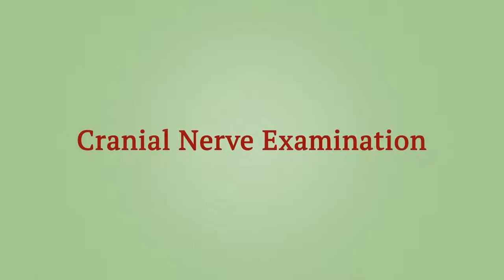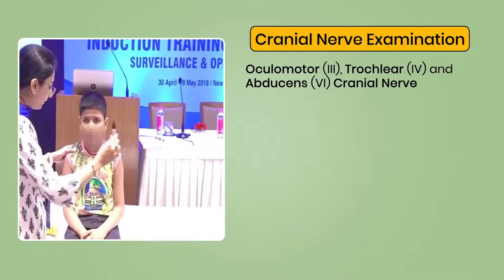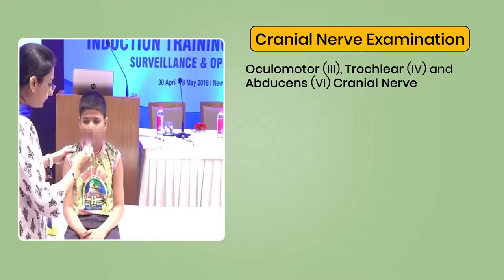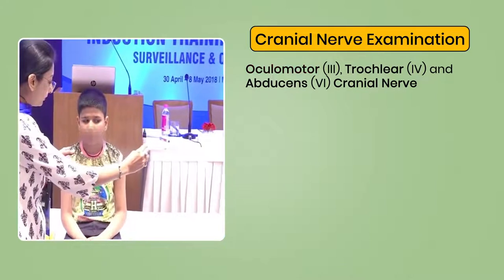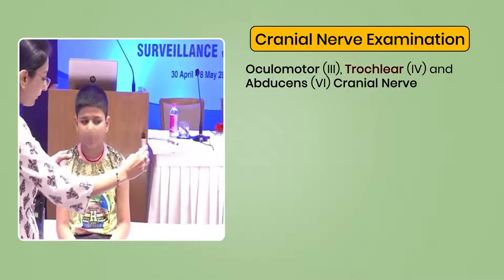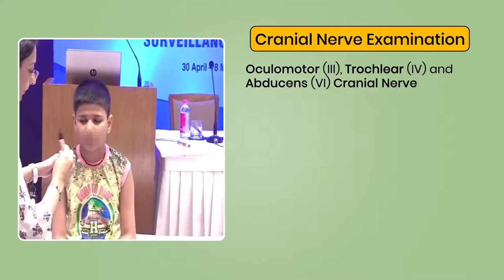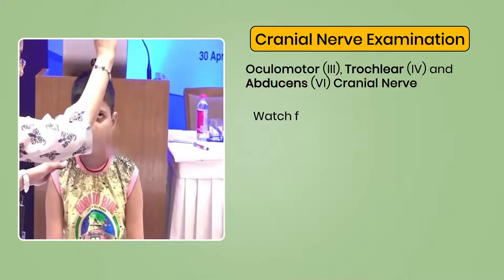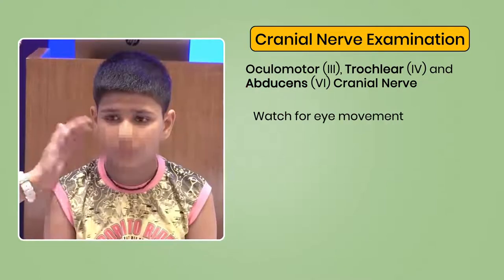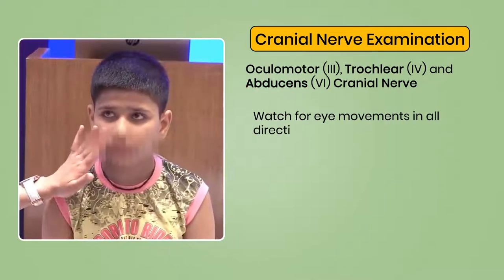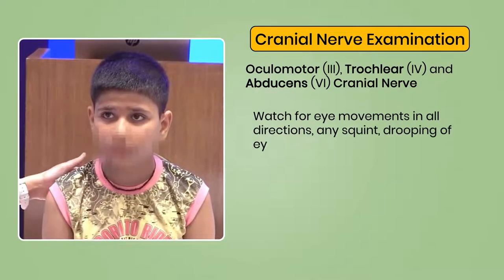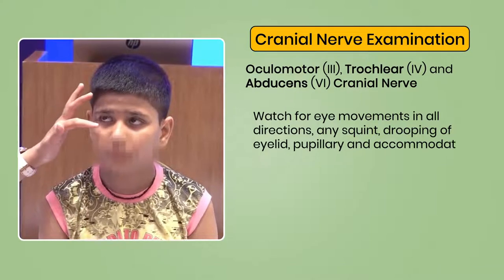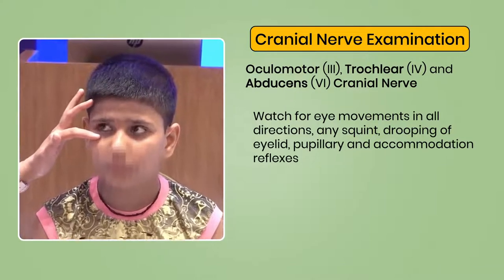Cranial nerve examination — 3rd, 4th, and 6th cranial nerves: the oculomotor nerve, trochlear nerve, and abducens nerve. Watch for eye movements in all directions, any squint, drooping of the eyelid, and pupillary and accommodation reflexes.